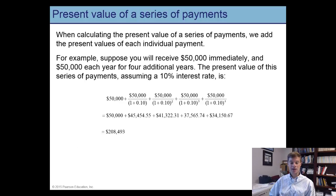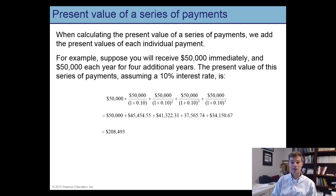Let's look at an example. Suppose that you are going to receive fifty thousand dollar payments five times. The first one occurs now, the second payment in one year, the third in two years, the fourth at the end of three years, and the fifth payment at the end of four years. Let's calculate the present value of this stream of five payments.